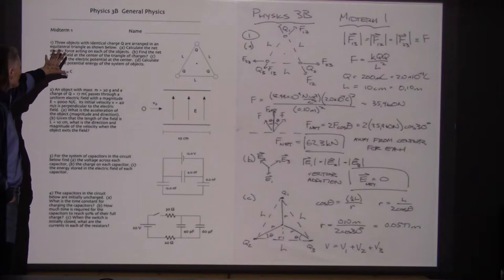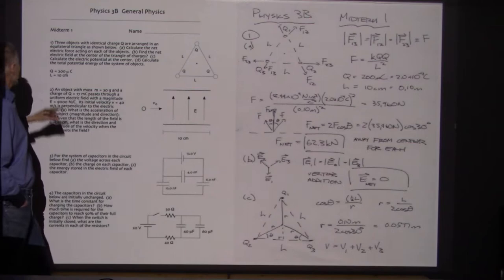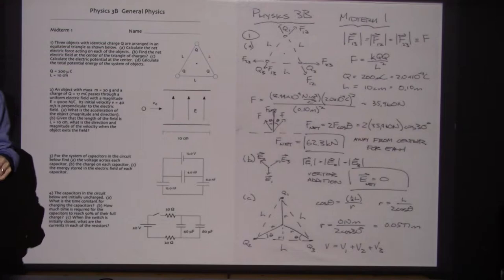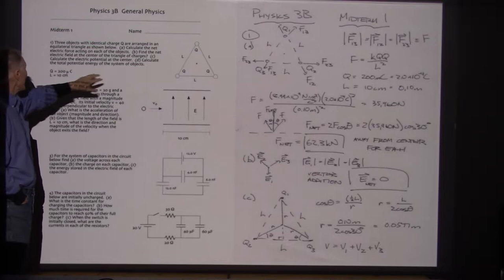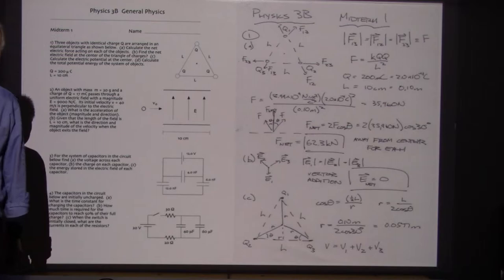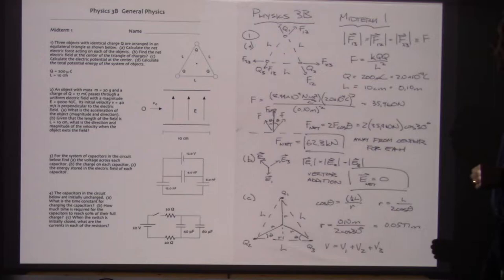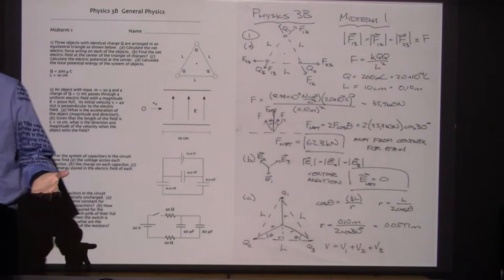In problem one, we have three objects. Each is charged and they all have the very same charge — let's say 200 microcoulombs each. They're forming an equilateral triangle where each side is 10 centimeters. There's a lot of symmetry: all objects have the same charge and all distances between charges are the same. Let's read the problem carefully before jumping in.